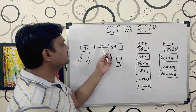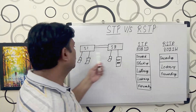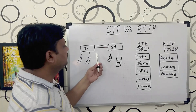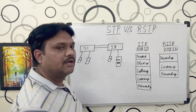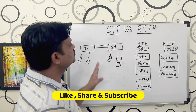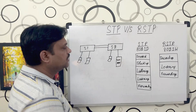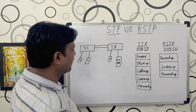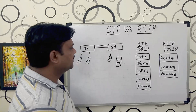If both these switches are manageable switches, then I can connect them like this for redundancy. If both switches are unmanaged, I will not be able to provide redundancy, because unmanaged switches do not have STP or RSTP protocol. Since both switches here are manageable, I can easily provide redundancy.